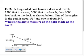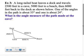It says a long-tailed boat leaves a dock and travels 2,500 feet to a cave, 5,000 feet to a beach, then 6,000 feet back to the dock as shown below. One of the angles in the path is about 55, and one is about 24. What is the angle measure of the path made at the cave? So really what you have to identify here is clearly the 24 is going to be the smallest angle in the diagram, and therefore it's got to be across from the smallest side, which means the angle at the beach has to be 24 degrees.